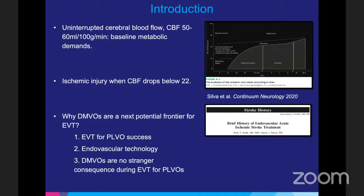As a brief introduction, we know that with acute ischemic stroke, time is brain. Brain tissue is very delicate — it has four times the metabolic need of every other tissue in the human body. It requires about 50 to 60 mLs per 100 grams per minute, and whenever that goes below 22, we have ischemic injury, resulting in a penumbra area and later infarction.